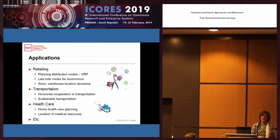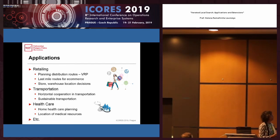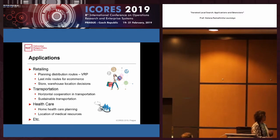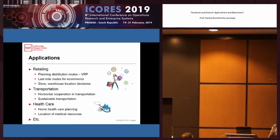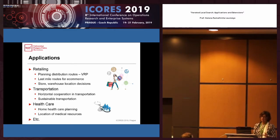These are problems that appear in many industries. I work a lot in retailing — the vehicle routing problem (VRP) is the most well known, but also location problems for stores and warehouses. I also work in transportation, and recently I have started working in healthcare, mostly healthcare logistics. There are a lot of applications in combinatorial optimization out there that we need to solve.